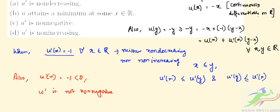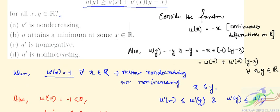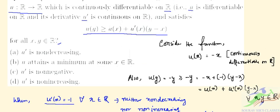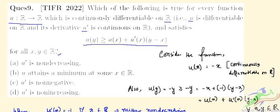Then only option b is correct for our question number 9, that is, u attains a minimum at some x in the real space, x is an element of ℝ. So option b is correct.